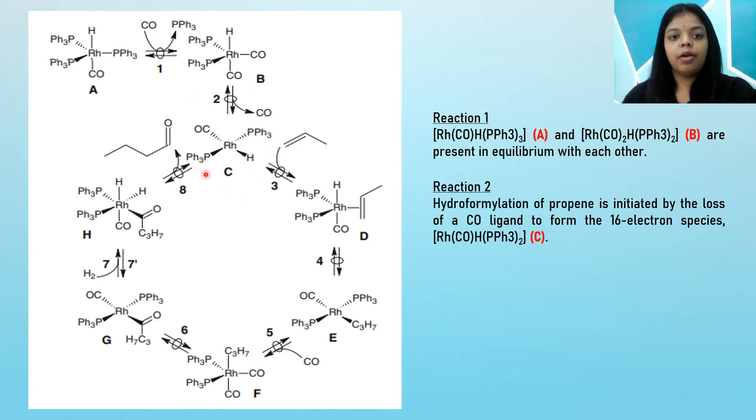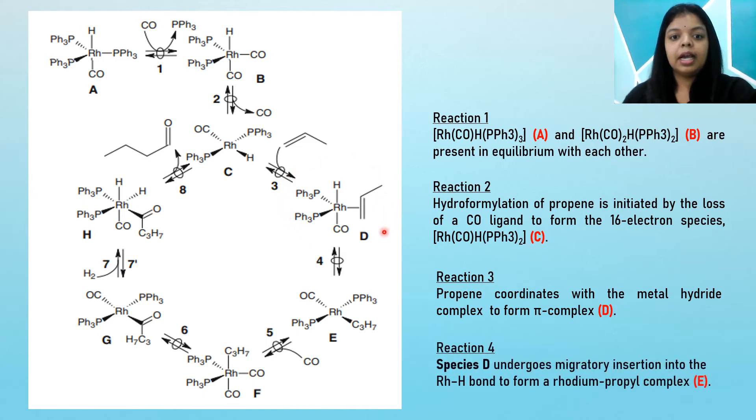Then from this complex, propene will coordinate to form the pi complex D. From pi complex D, a migratory insertion into the rhodium-hydrogen bond will occur to form a rhodium-propyl complex which is species E. As you notice here, the propyl is now attached to the rhodium and the hydrogen that was attached earlier is no longer attached, so it is being removed.